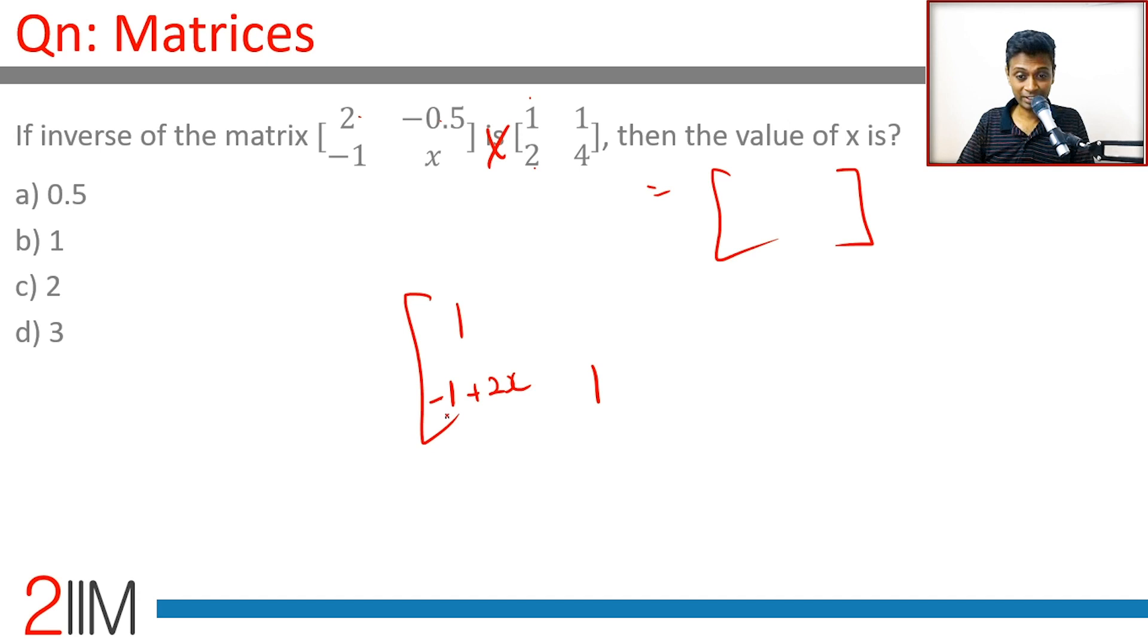We just need this to be 0. Minus 1 plus 2x is equal to 0, 2x is equal to 1, x is 1 by 2. Automatically this should also turn out to be 0, this should turn out to be 1.